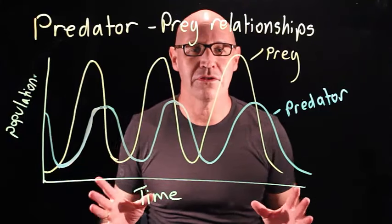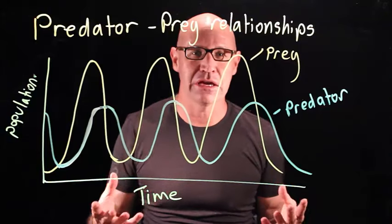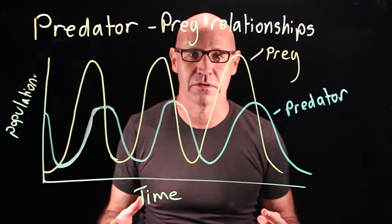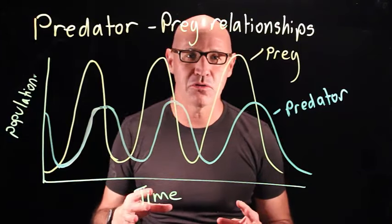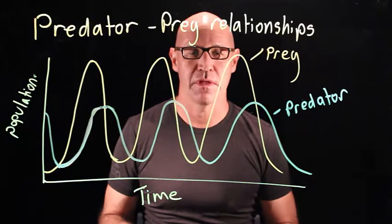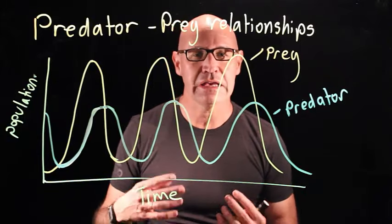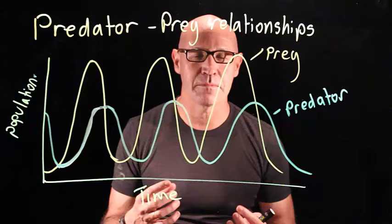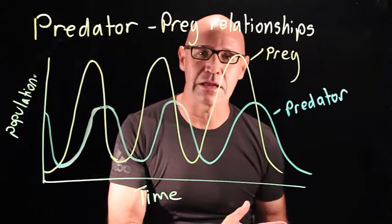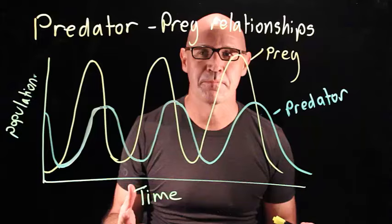An important way that we can look at the interrelationship between different organisms is by looking at a predator-prey relationship. The predator is the organism that eats the prey, and the prey is the poor thing that gets eaten.